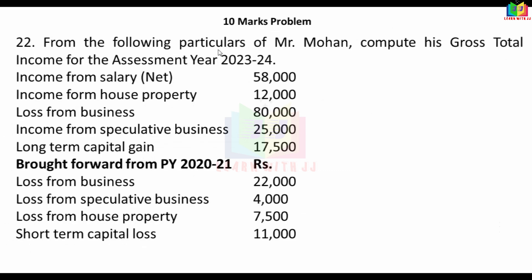Next problem: From the following particulars of Mr. Mohan, compute his gross total income for the assessment year 23-24. Income from salary Rs.58,000 (net), income from house property Rs.12,000, loss from business Rs.80,000, income from speculative business Rs.25,000, long-term capital gain Rs.17,500. Brought forward from previous year 2021: loss from business Rs.22,000, loss from speculative business Rs.4,000, loss from house property Rs.7,500, short-term capital loss Rs.11,000.